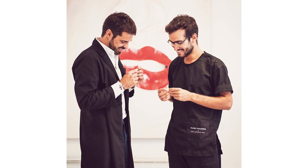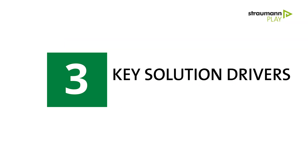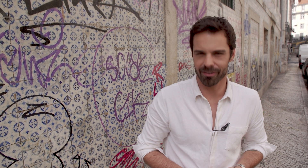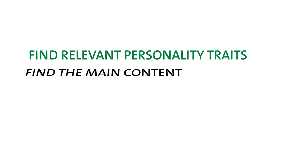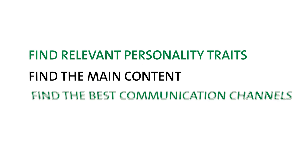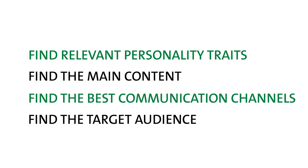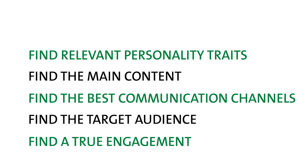Let's start with a practical example so you can understand better. The key solution drivers I've identified to set the right digital personality were the following: first, find relevant personality traits; second, find the main content; third, find the best communication channels; fourth, find the target audience; and fifth, find true engagement. The first step is to find the ideal traits to communicate in the digital world.